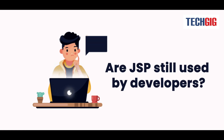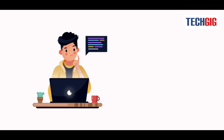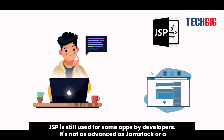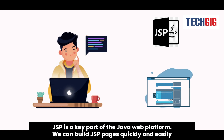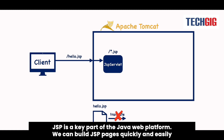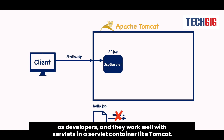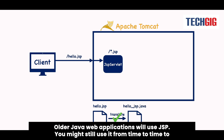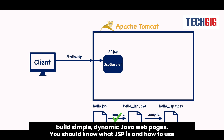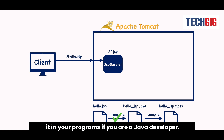Is JSP still used by developers? JSP is still used for some apps by developers. It's not as advanced as Jamstack or a template engine like Thymeleaf, but sometimes it's best to keep things simple. JSP is a key part of the Java web platform. We can build JSP pages quickly and easily, and they work well with servlets in a servlet container like Tomcat. You could say that JSP is like PHP and ASP in the .NET world, but for Java. Older Java web applications will use JSP, and you might still use it to build simple, dynamic Java web pages. You should know what JSP is and how to use it if you are a Java developer.